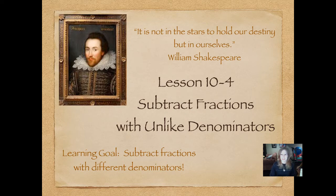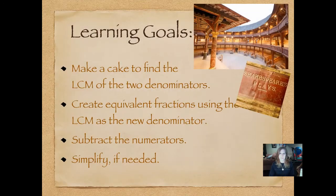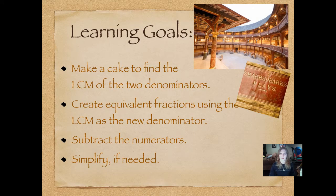I hope you have a great attitude towards math and that you work hard and don't give up. Our learning goal tonight is to subtract fractions with different denominators, and that word unlike just means different. Here are our individual lesson learning goals. Make a cake to find the LCM, or the least common multiple, of the two denominators. Create equivalent fractions using the LCM as the new denominator. Subtract the numerators and simplify if needed.